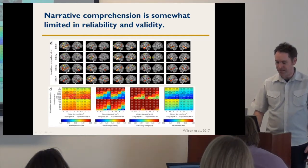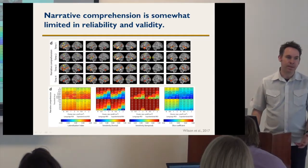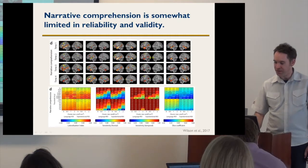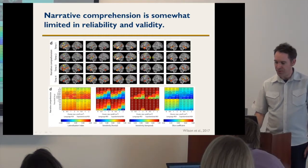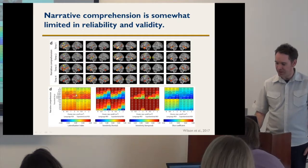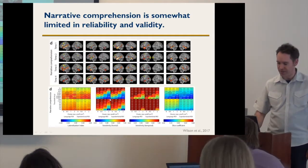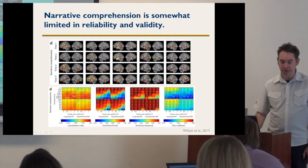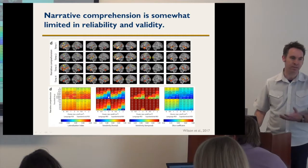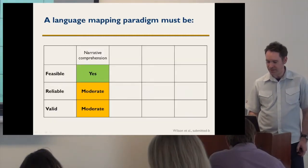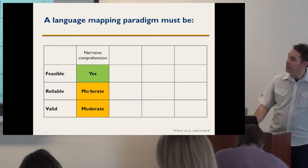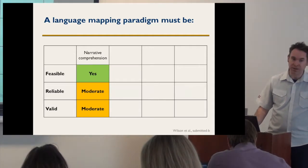Narrative comprehension gives a very symmetrical activation pattern. Furthermore, it doesn't activate frontal areas reliably at all. The lateralization is actually moderately good, but not great — and the parameters that give you good lateralization give you the worst reliability, so there's a trade-off with a poor outcome. Temporal sensitivity is good; frontal sensitivity is rather poor at the parameters that are well-lateralized. So it's kind of not very reliable and not very valid as a language mapping paradigm.